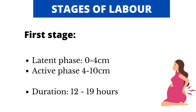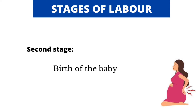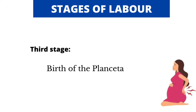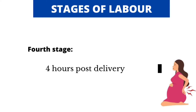The active phase is about 4 to 10 centimeters of cervical dilatation. The second stage of labor involves the birth of the baby. The third stage involves the birth of the placenta. During the third stage, there is also estimation of blood loss and the mother is cared for. Finally, the fourth stage is 4 hours post delivery where the mother and baby are observed for any abnormality.